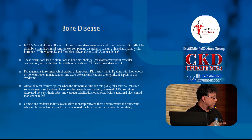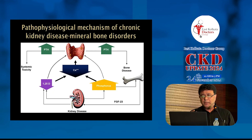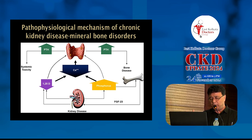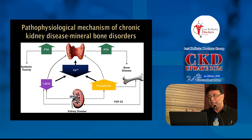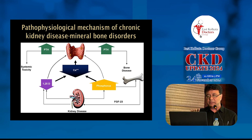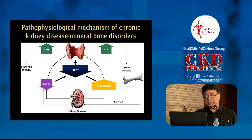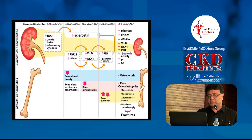The pathophysiology of mineral bone disease is as follows: when GFR decreases, phosphate is retained. That retained phosphate causes hypocalcemia, which stimulates the calcium-sensing receptor in the parathyroid gland, increasing PTH. PTH has systemic toxicity and causes bone disease. At the same time, phosphorus directly inhibits 1-alpha hydroxylase, reducing active vitamin D (1,25-dihydroxycholecalciferol), which in turn directly stimulates parathormone, further increasing PTH.